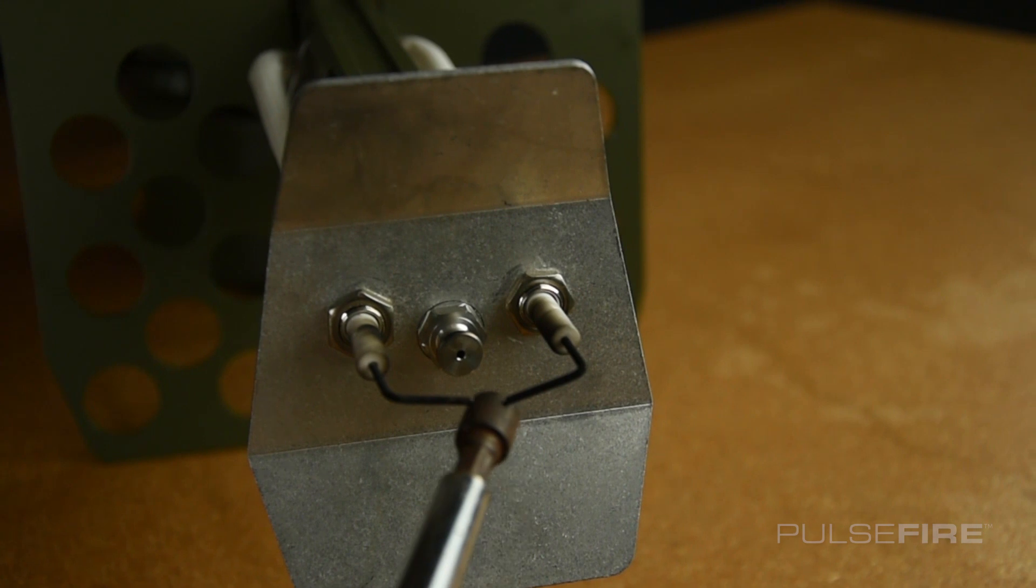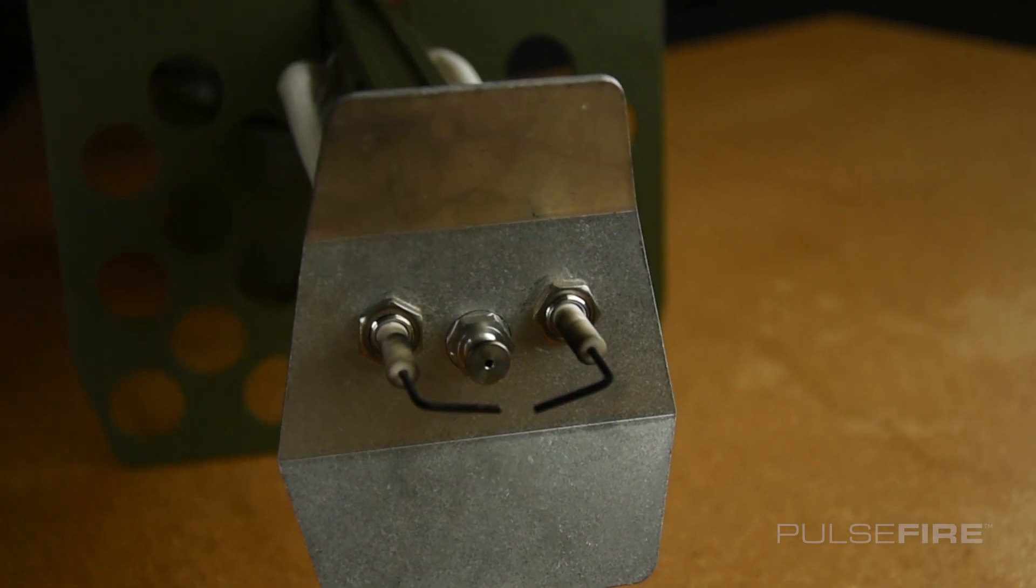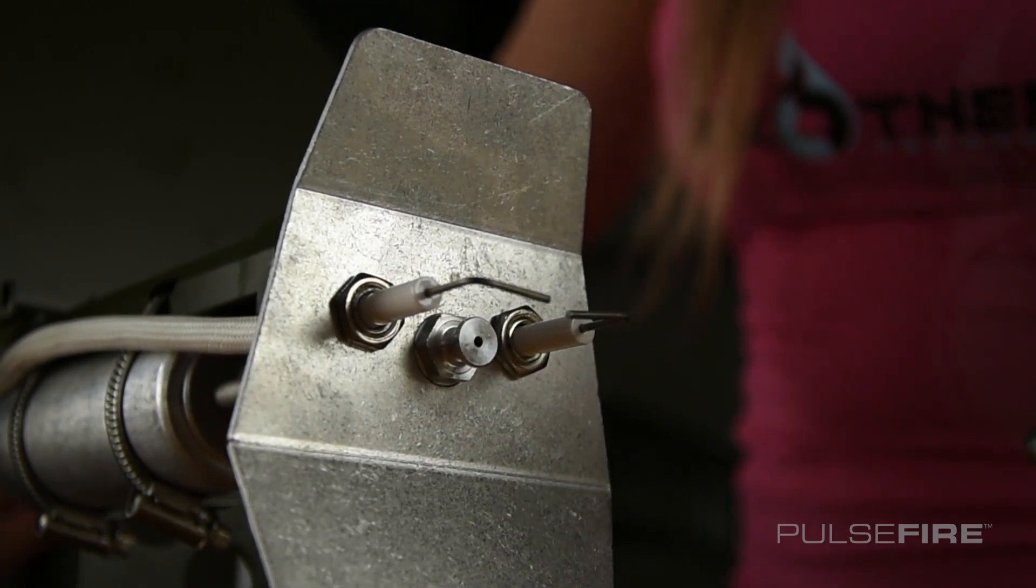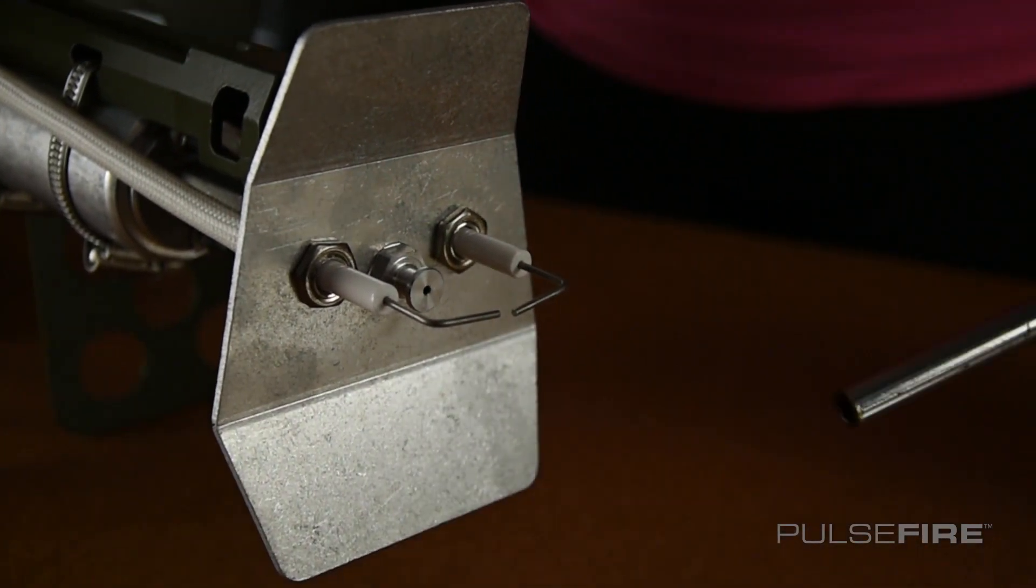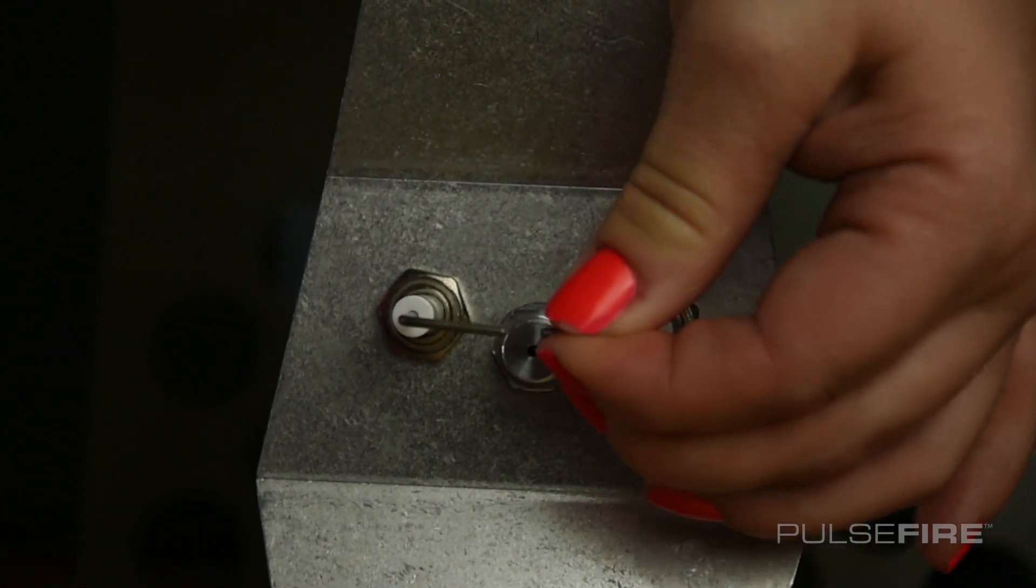Discharge any leftover electric buildup using a screwdriver or similar tool with an insulated handle to touch across the two electrodes. The electrodes can be bent to shape by hand.